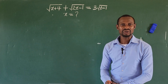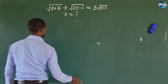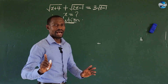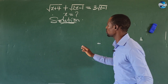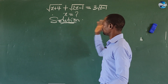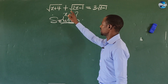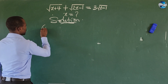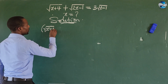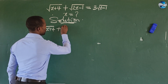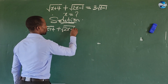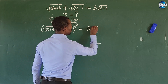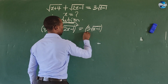Let's go into solving this without much waste of time. The first thing we have to do is take the square of both sides, because this is a square root. So let's square both sides of the equation. This gives us: the bracket square root of x plus 4, plus the square root of 2x minus 1, close bracket, squared, equals 3 times the square root of x minus 1, squared.